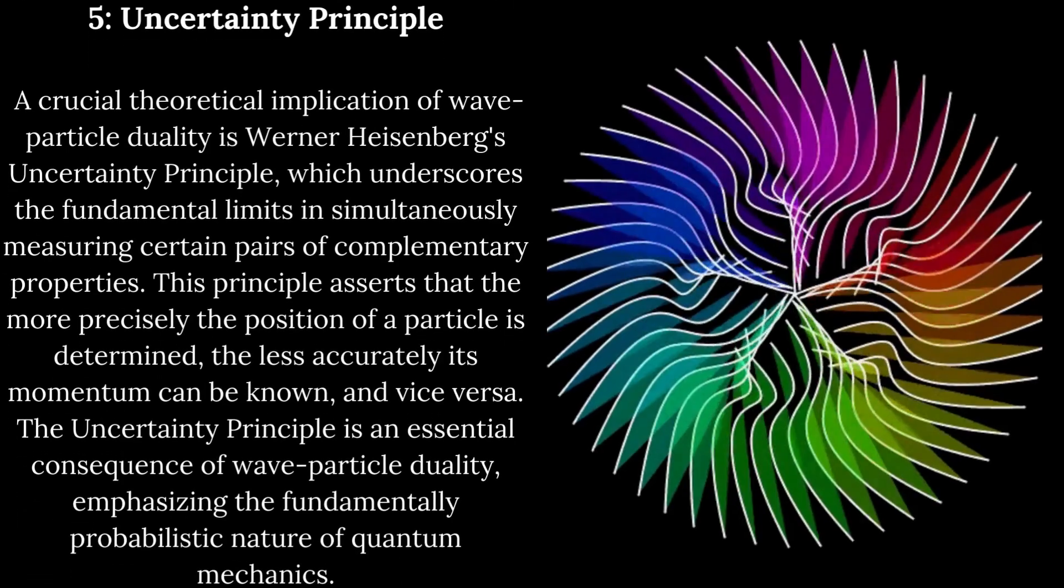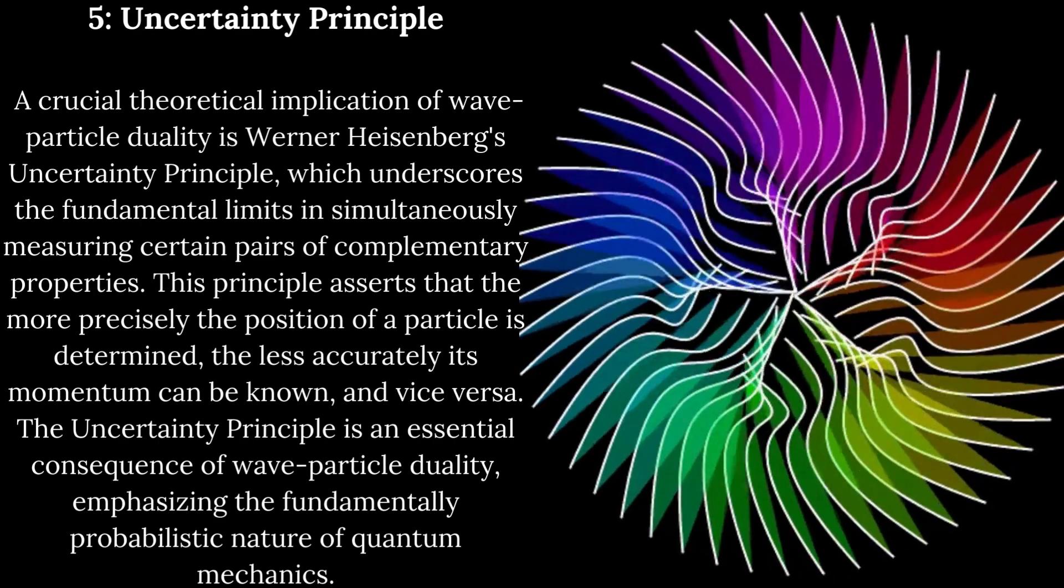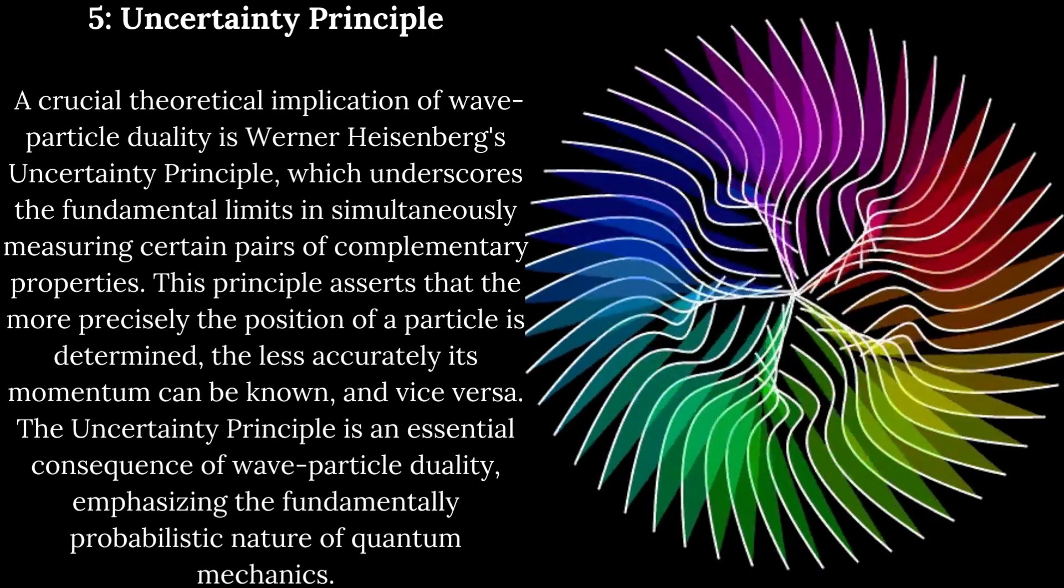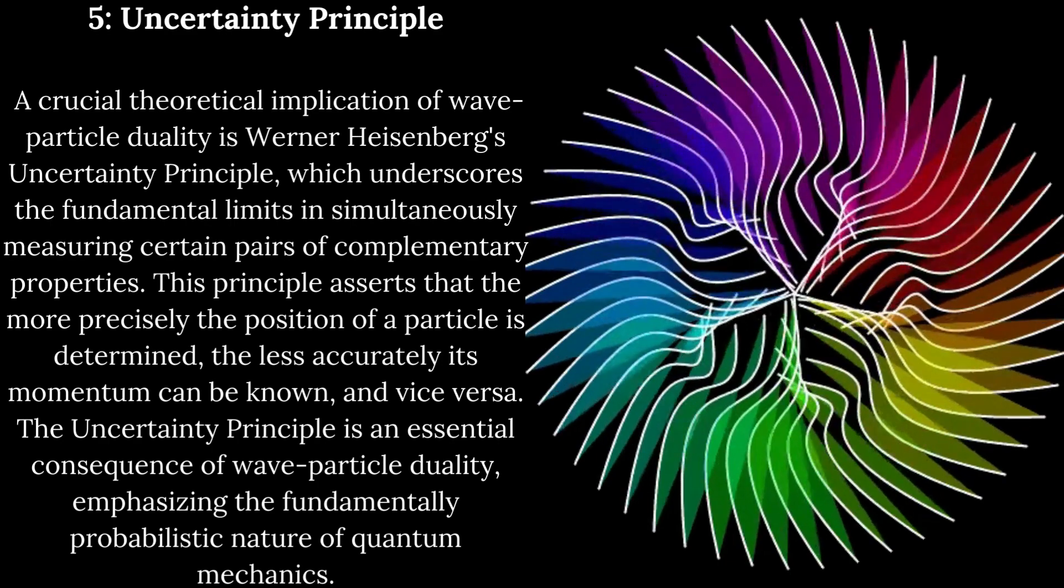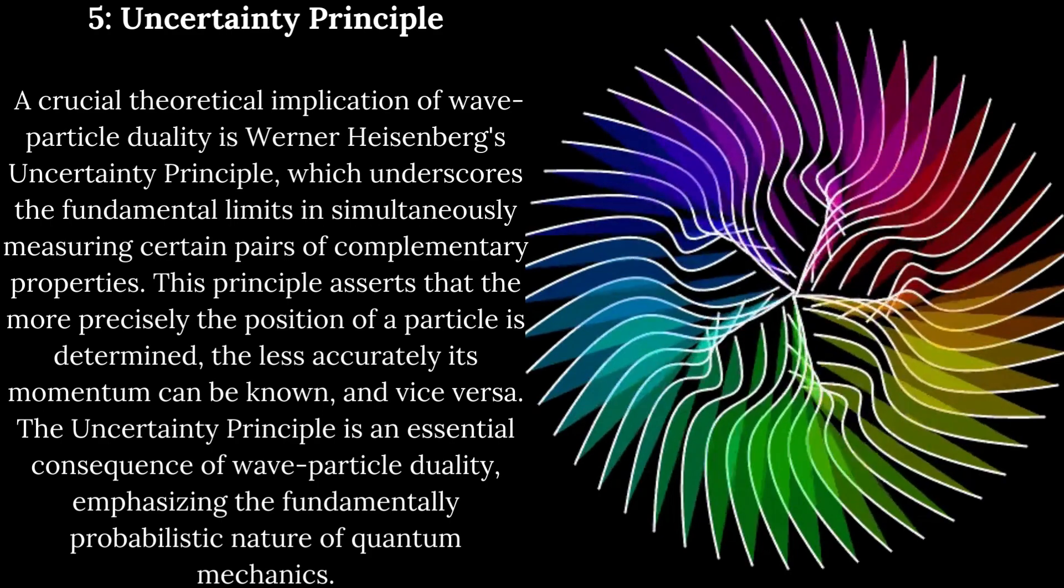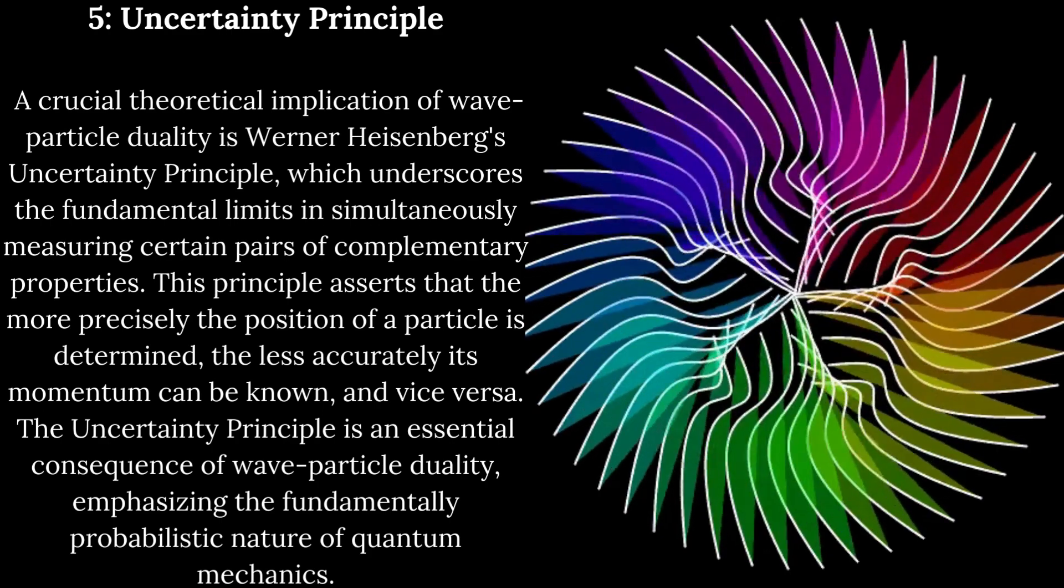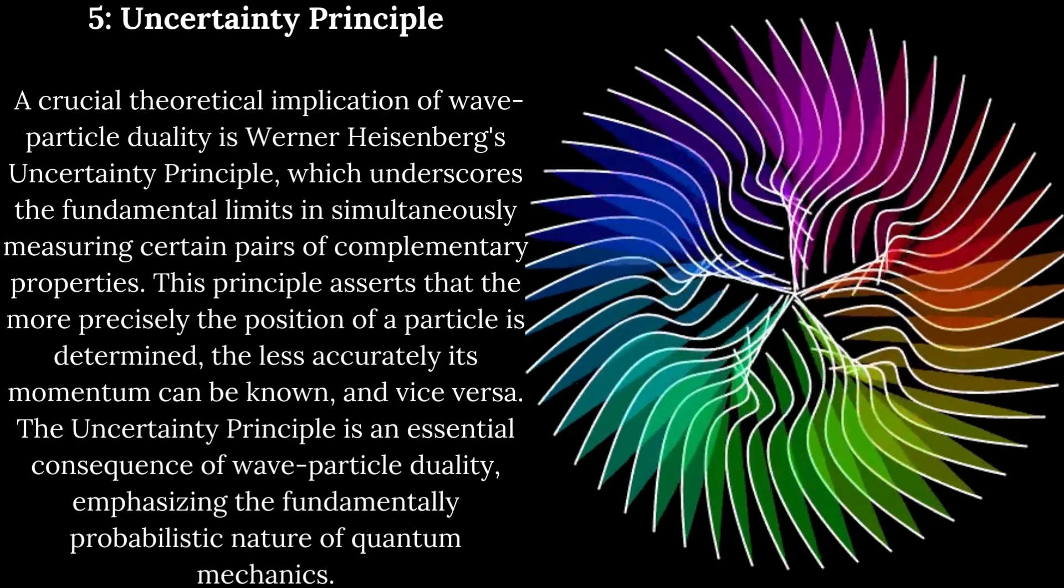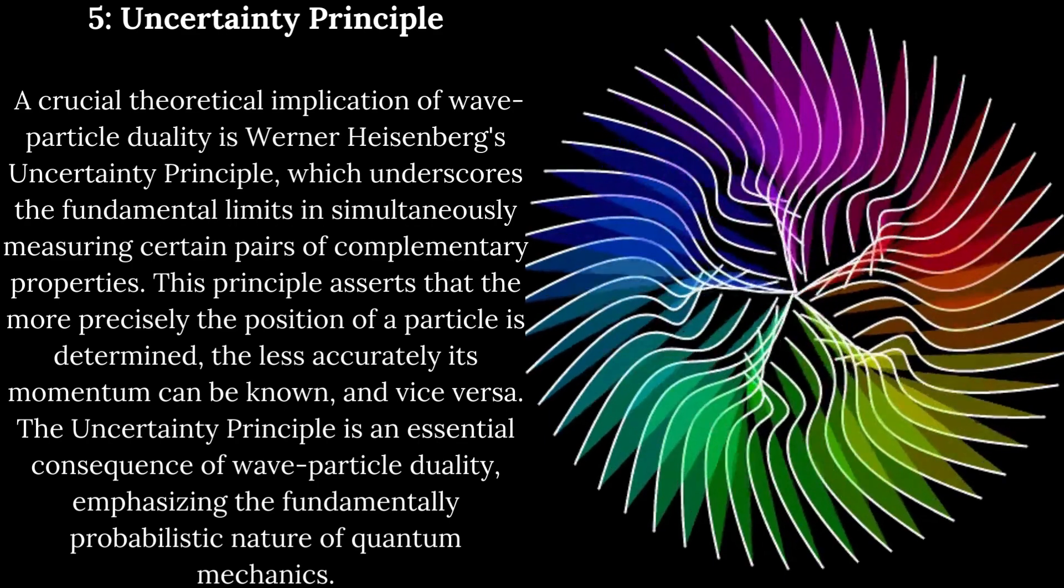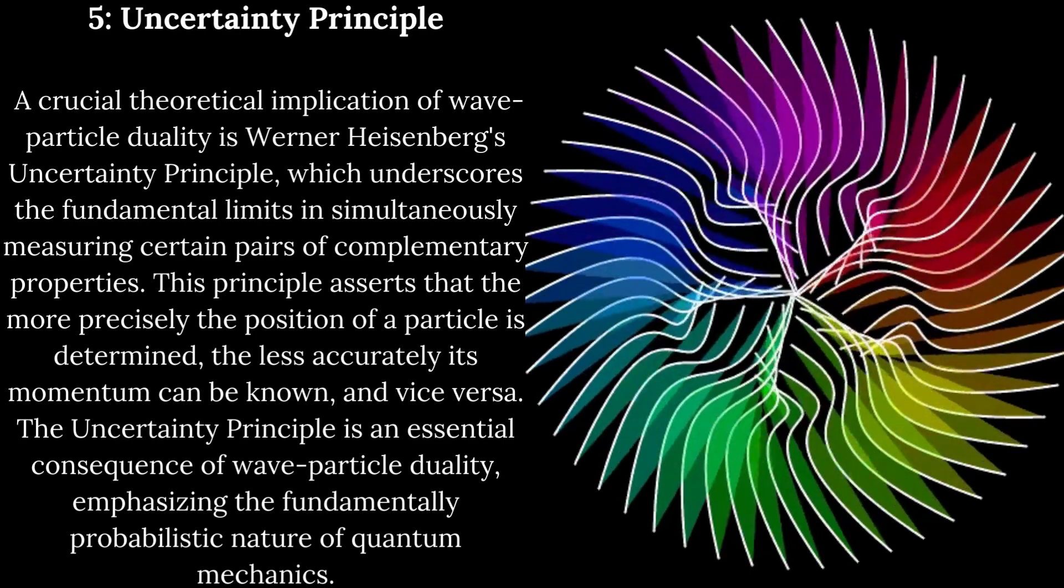Uncertainty principle. A crucial theoretical implication of wave-particle duality is Werner Heisenberg's uncertainty principle, which underscores the fundamental limits in simultaneously measuring certain pairs of complementary properties. This principle asserts that the more precisely the position of a particle is determined, the less accurately its momentum can be known, and vice versa. The uncertainty principle is an essential consequence of wave-particle duality, emphasizing the fundamentally probabilistic nature of quantum mechanics.